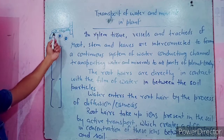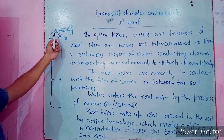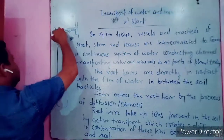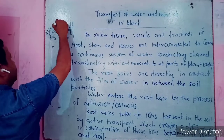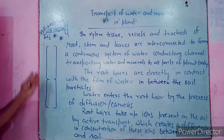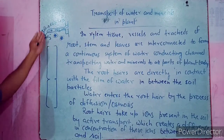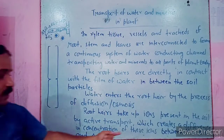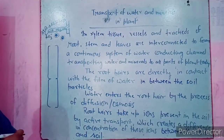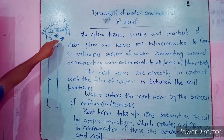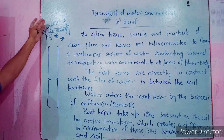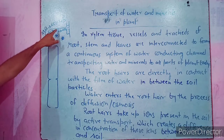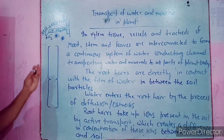Inside the root hair, the concentration of ions is higher, while in the soil it is lower. The root hair takes up ions through active transport with energy expenditure — ATP is split into ADP and inorganic phosphate. This active uptake creates a concentration difference in ions between the root and soil, and as a result, water moves into the root hair from the soil continuously by osmosis.